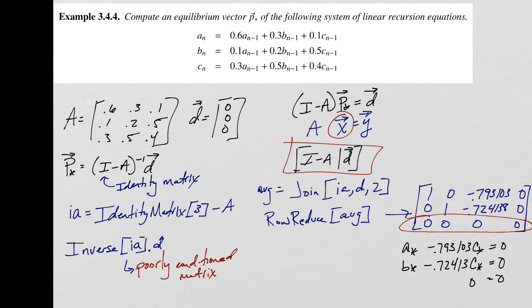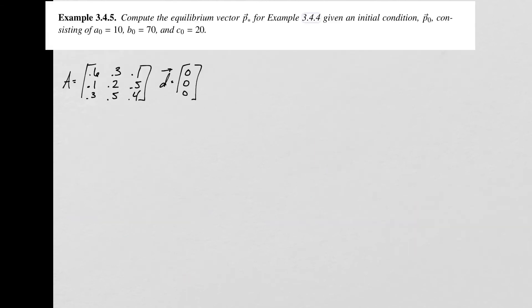This takes us to the next problem, which is example problem 3.4.5. Now we're going to look at example 3.4.5. We're asked to compute the equilibrium vector given this initial condition. We've got A naught is 10, B naught is 70, and C naught is 20. If I was to write that mathematically, I'd write something along the lines of P bracket 0 equals 10, 70, and 20. So there's my initial condition added in here.